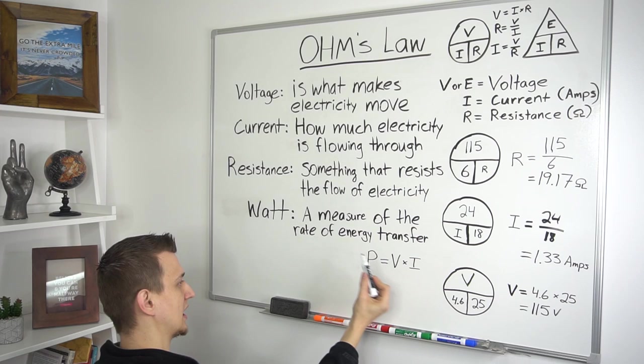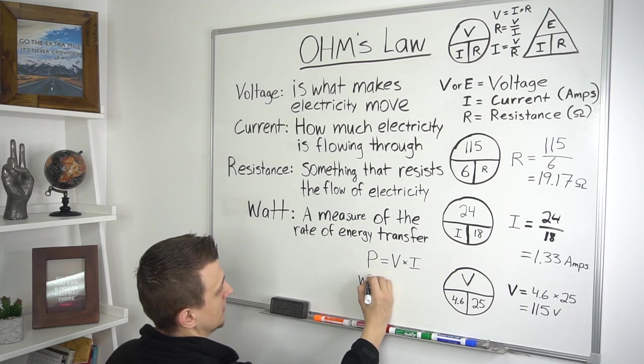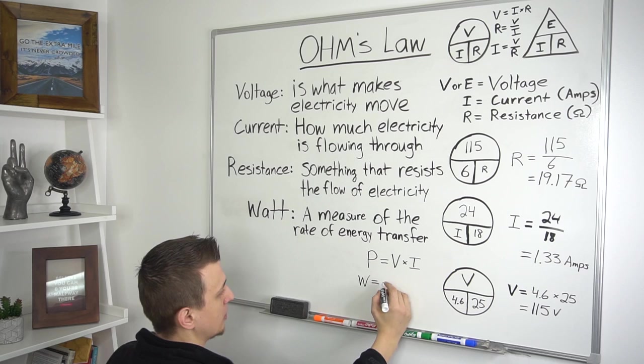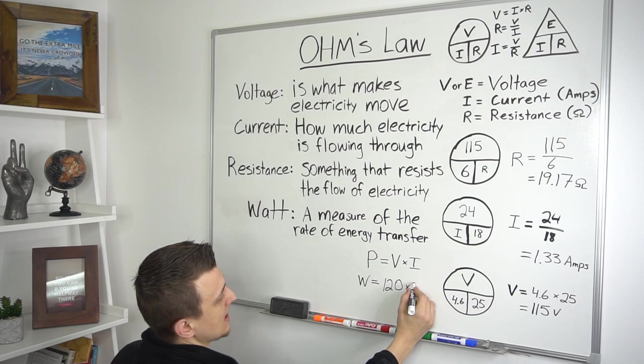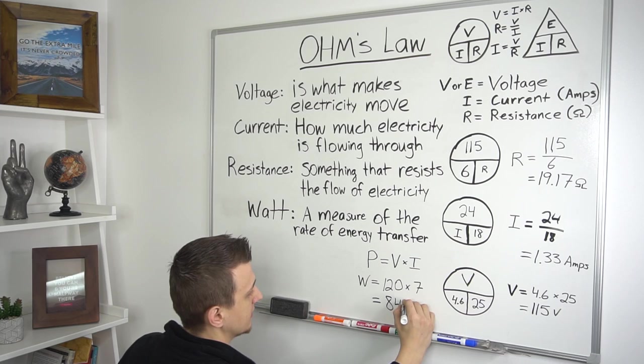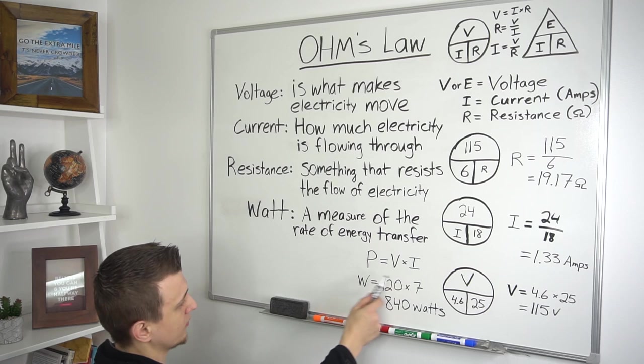So for example, let's just use W. W for watts equals, let's say that our voltage is 120 volts times 7 amps. That would equal to 840 watts. So that is the formula used to figure out watts.